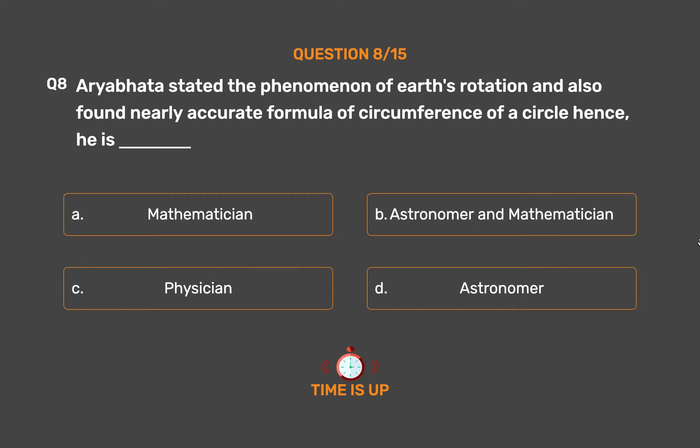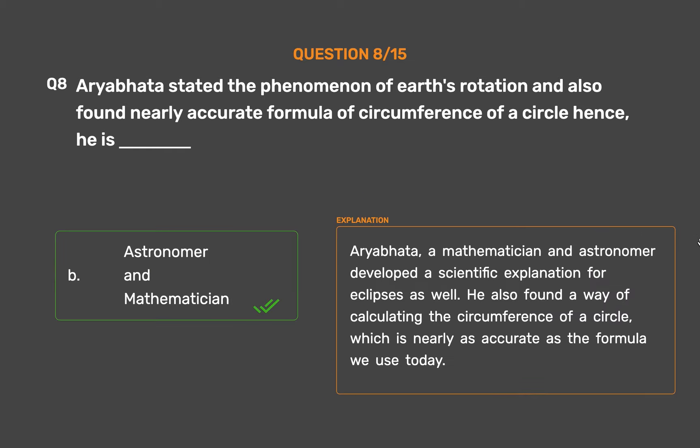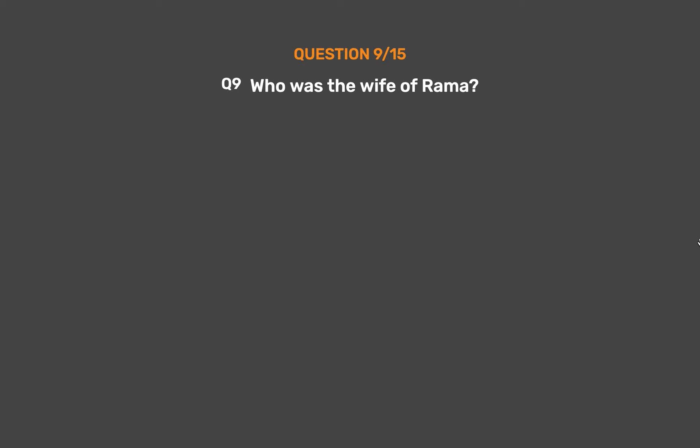The correct answer is Option B: Astronomer and Mathematician. Aryabhata, a mathematician and astronomer, developed a scientific explanation for eclipses as well. He also found a way of calculating the circumference of a circle, which is nearly as accurate as the formula we use today.